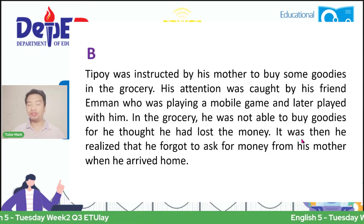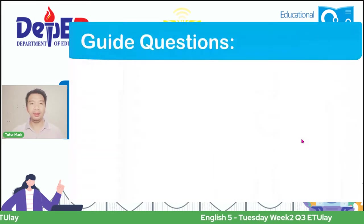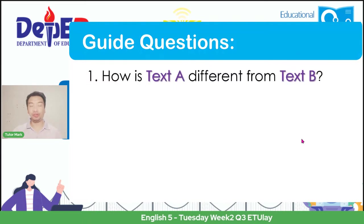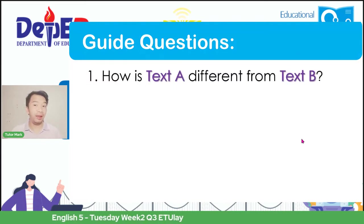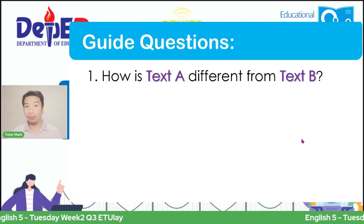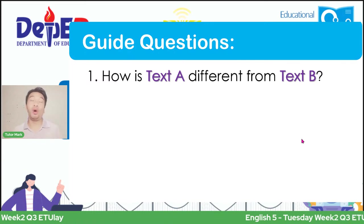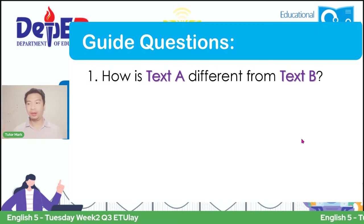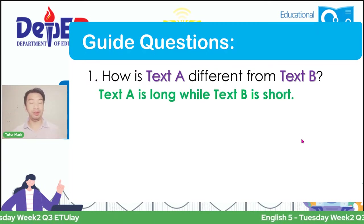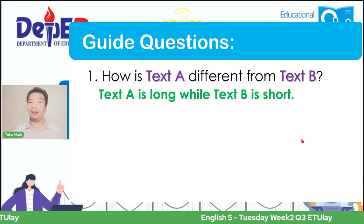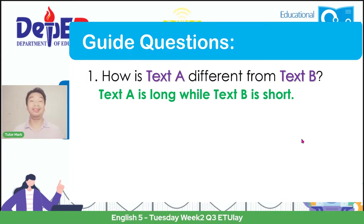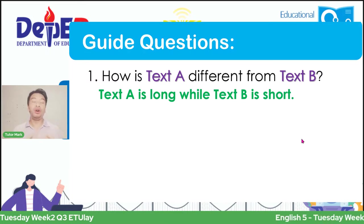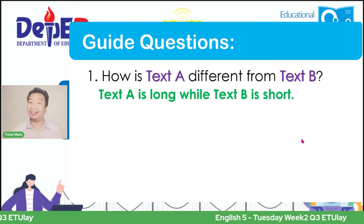Let us answer the following guide questions. Number one: how is Text A different from Text B? These questions can also be found in your self-learning module. What is the difference? If your answer is 'Text A is long while Text B is short,' then you are correct—because Text B is the summarized version, or the short version, of the long text in Text A.